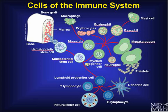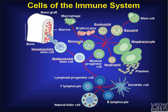Next, Ebola affects macrophages and monocytes. Many macrophages and monocytes are hijacked by Ebola and told to open up blood vessels, causing inflammation and internal bleeding, which is one of the major problems.